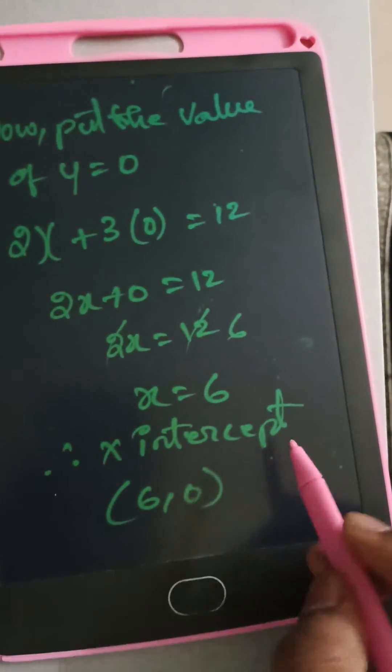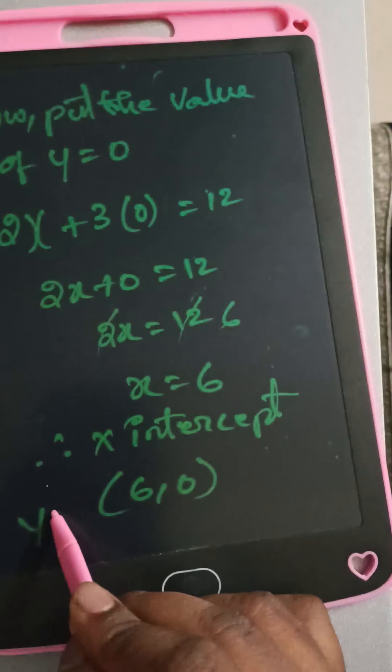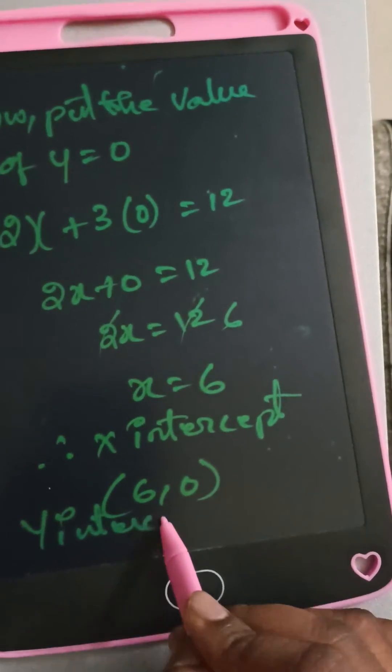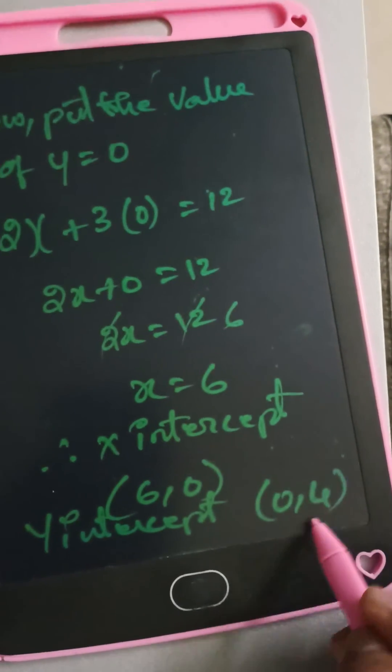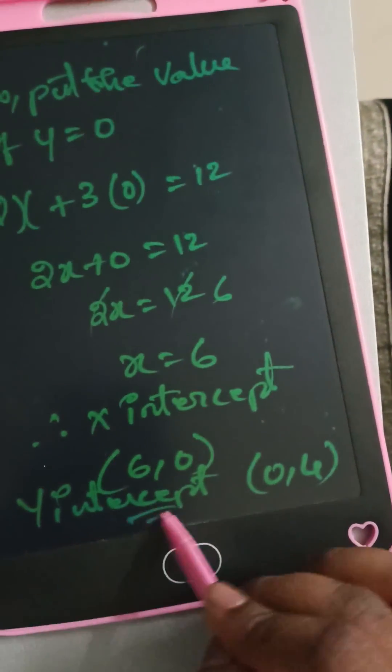X-intercept value is (6, 0), y-intercept value is (0, 4).